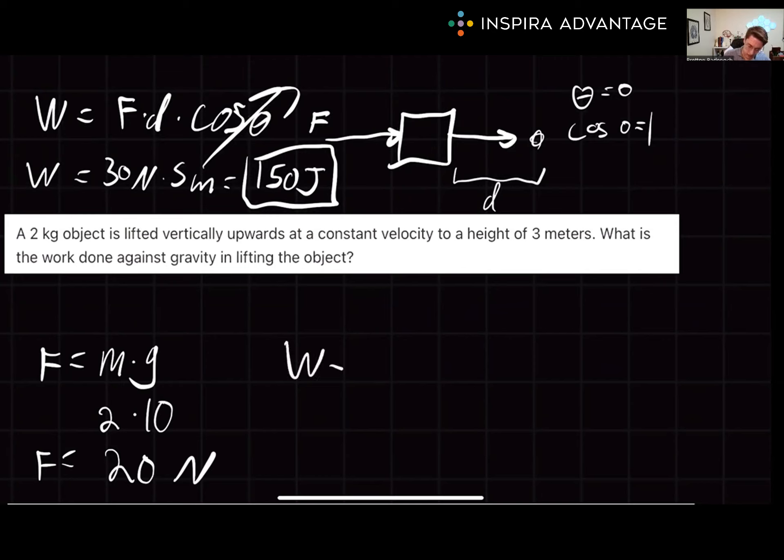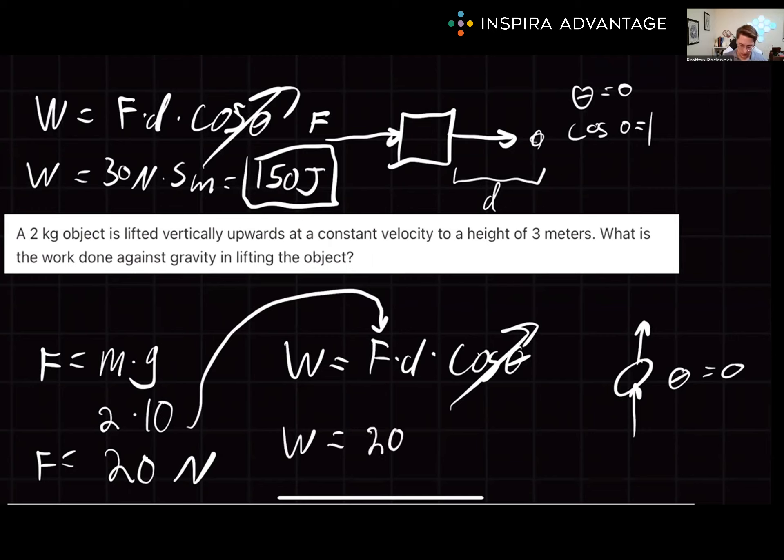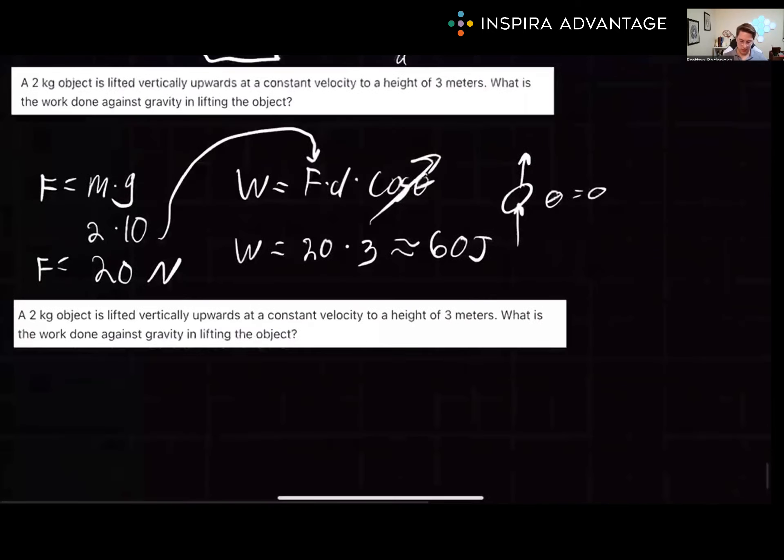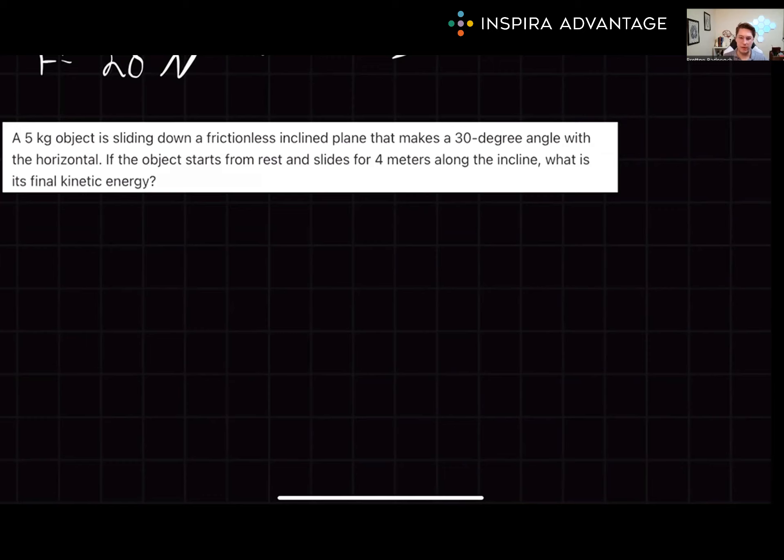Now we need to figure out the work being done. Work is force times distance times cosine theta. Once again, we're pulling all in the same direction, so theta is zero. We can just plug in our force and the distance of three meters. So work equals 20 times three, which equals approximately 60 joules. Hopefully this one went well for you. Let's move on to the next.